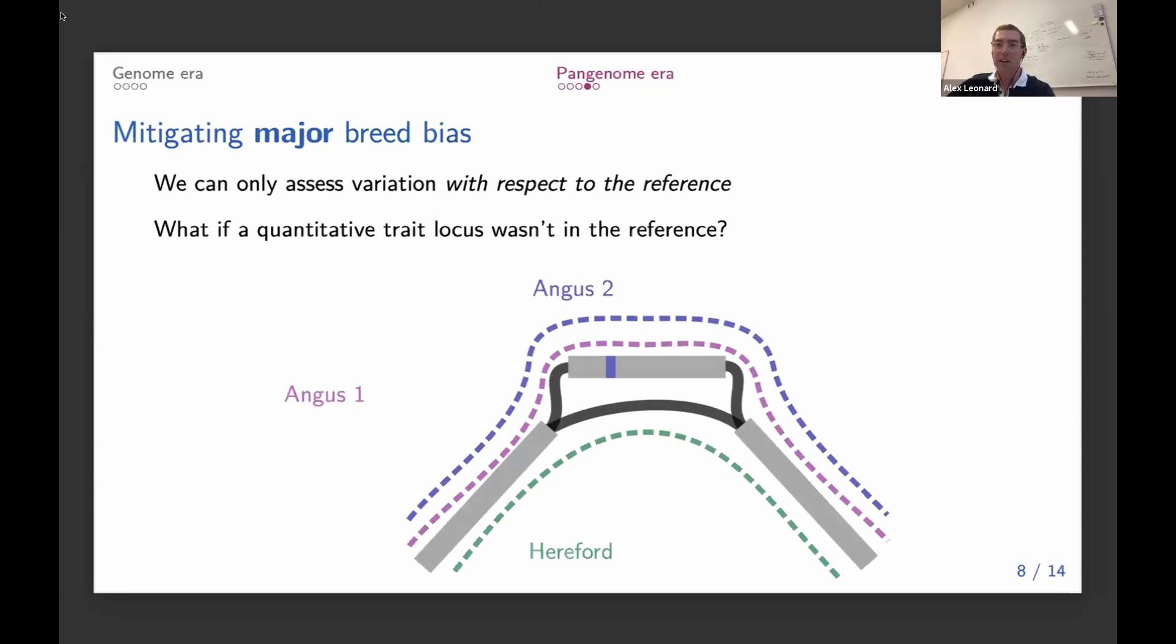In a pangenome, we can include this non-reference sequence. It gives us a new way of talking about this non-reference sequence in a proper coordinate format. So we can still then talk about how Angus can differ from Angus, Angus can differ from Hereford...